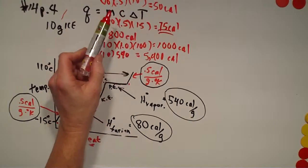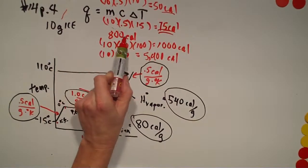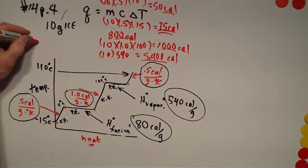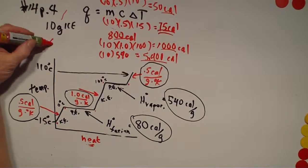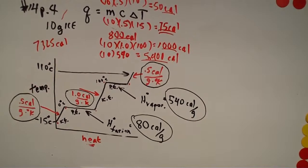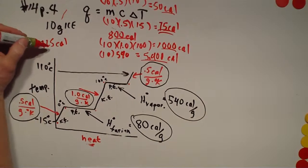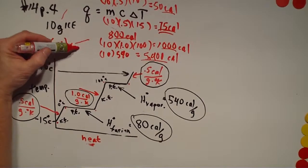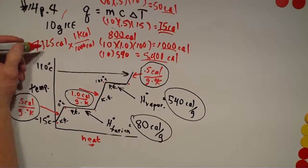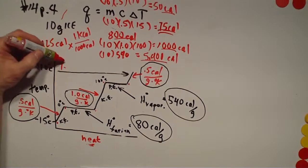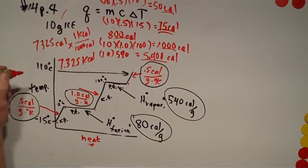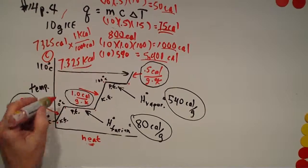What this problem requires is adding up: 75 + 800 + 1000 + 5400 + 50 calories. When you add it all up you get 7325 calories total. There's no answer in calories on the answer sheet, but I do see kilocalories. Since there are 1000 calories in 1 kilocalorie, that moves the decimal point over three places, giving an answer of 7.325 kilocalories — which is selection C.